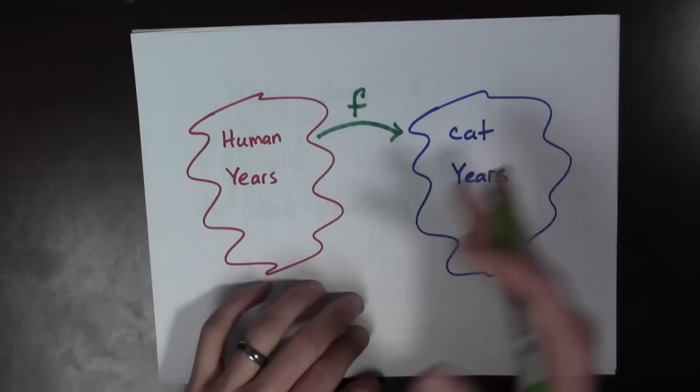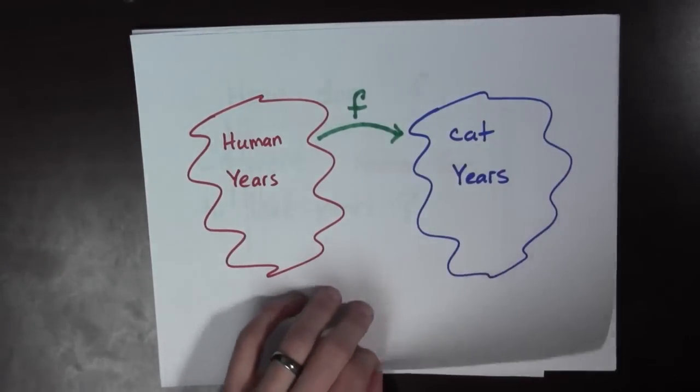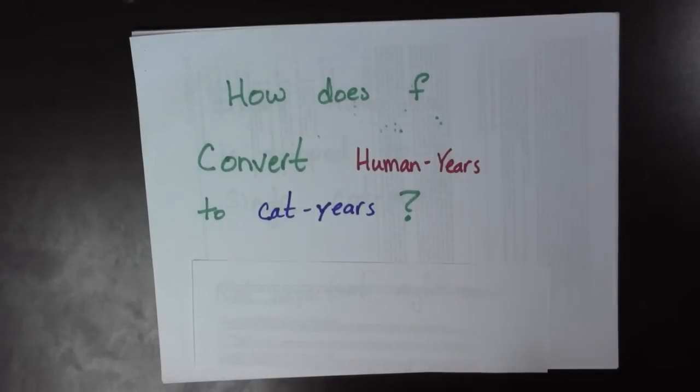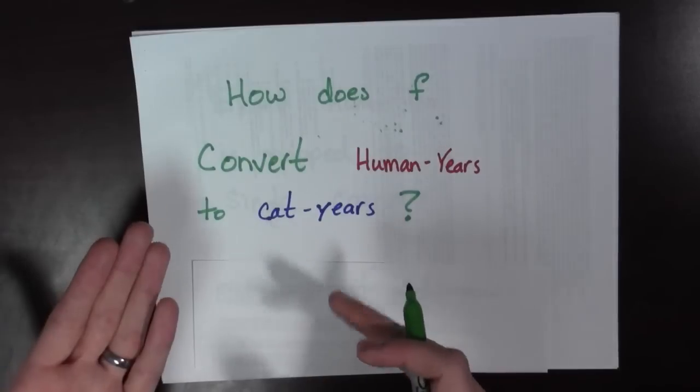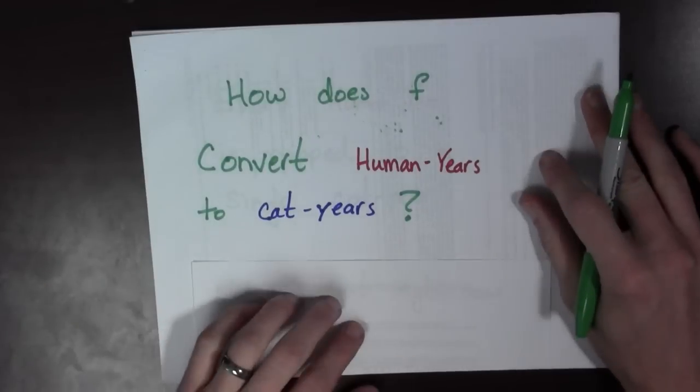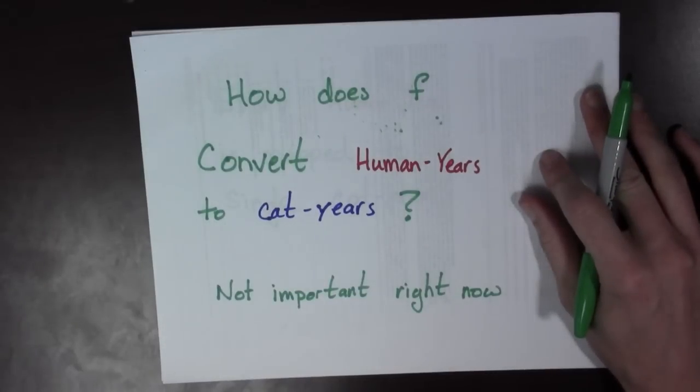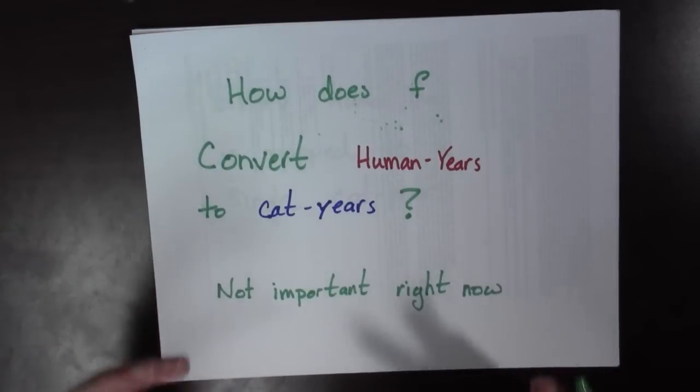And you may ask yourself, okay, so that's great, Bart. We have human years over here, and we have cat years over here. But, how does f actually do the conversion from human years to cat years? How does it work exactly? Well, you're not going to like this, but it's not real important right now. It's just, that's not the important issue.